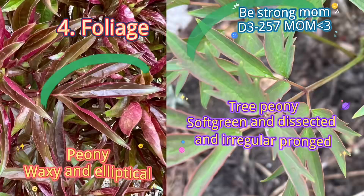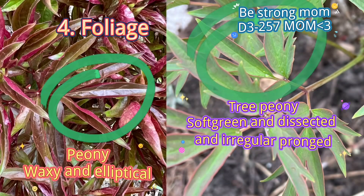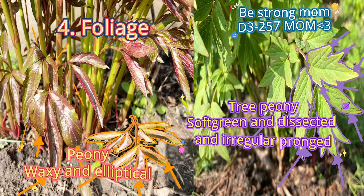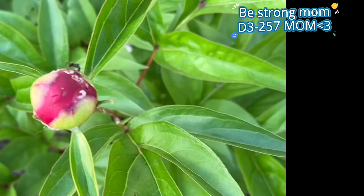The fourth one is foliage. Peonies have waxy and elliptical leaves. Tree peonies have soft green, dissected, and irregular brown foliage.